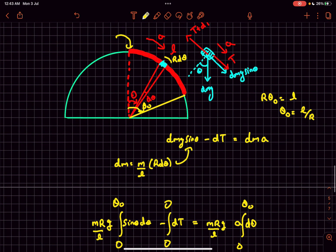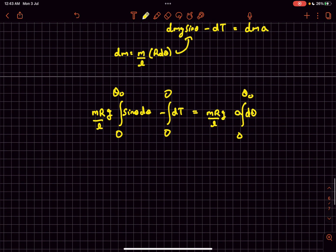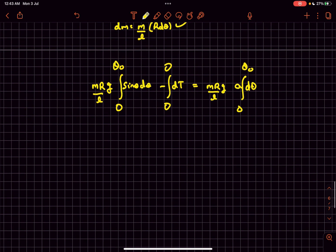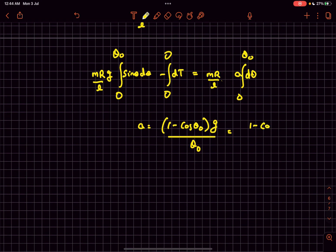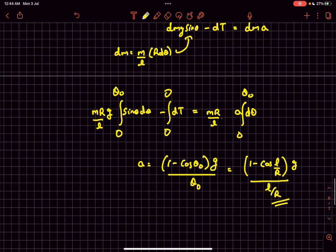The tension term will go away and we can directly get the acceleration. From here we'll get the acceleration, and with theta_0 = l/r, this gives us (g/l)(1 - cos(l/r)). This is the value of acceleration of this rope.